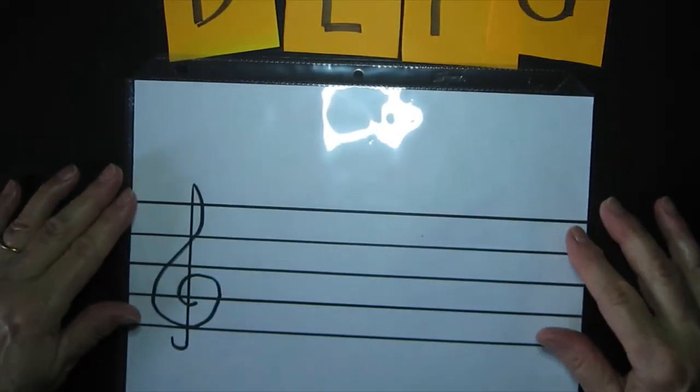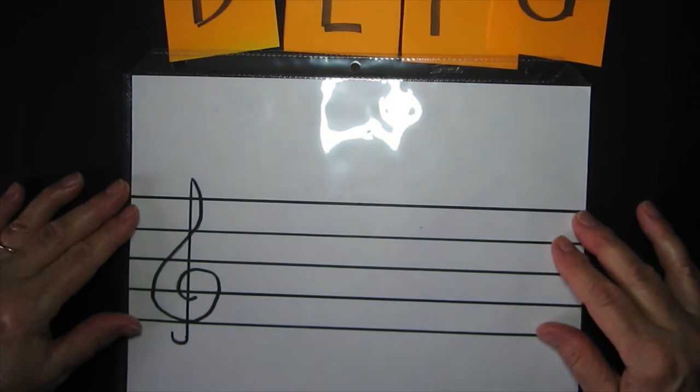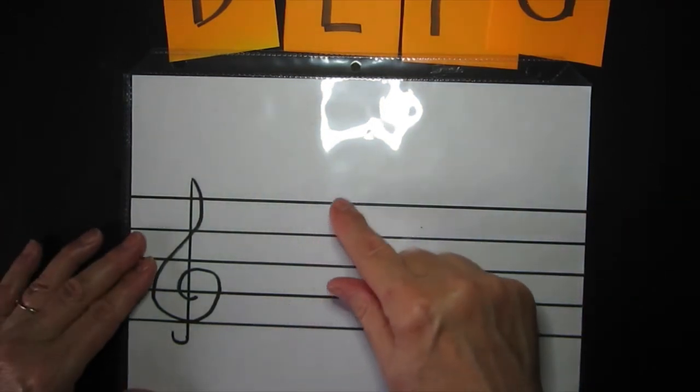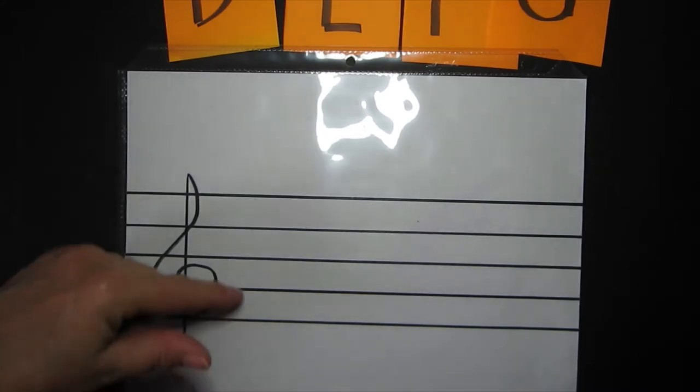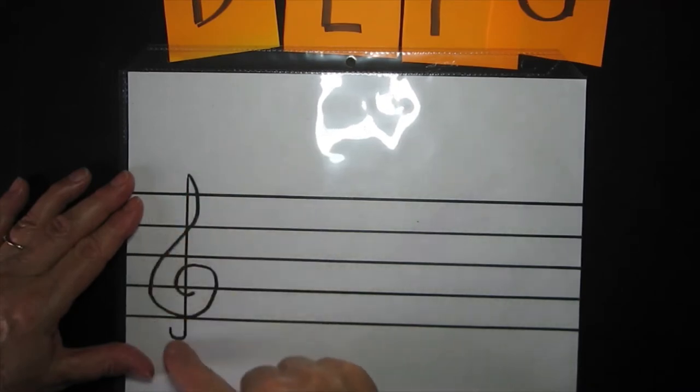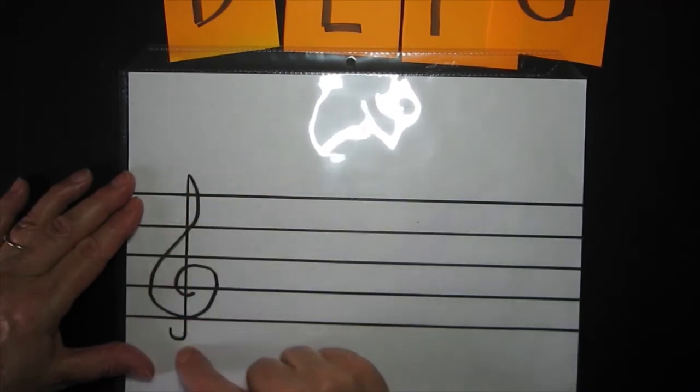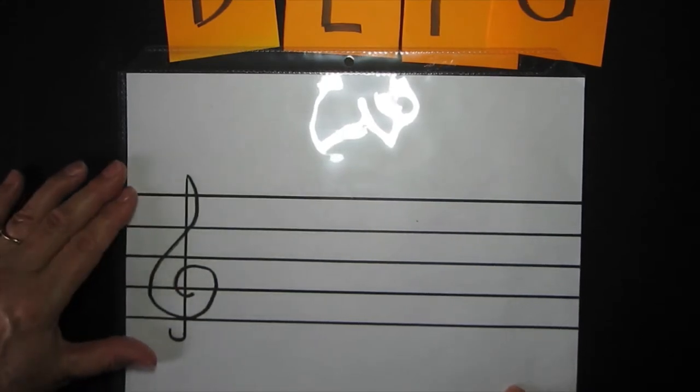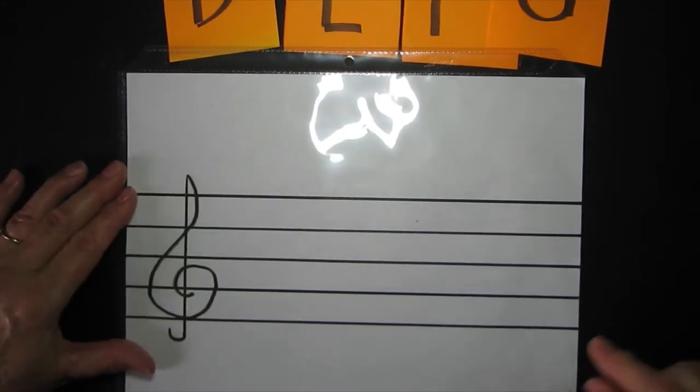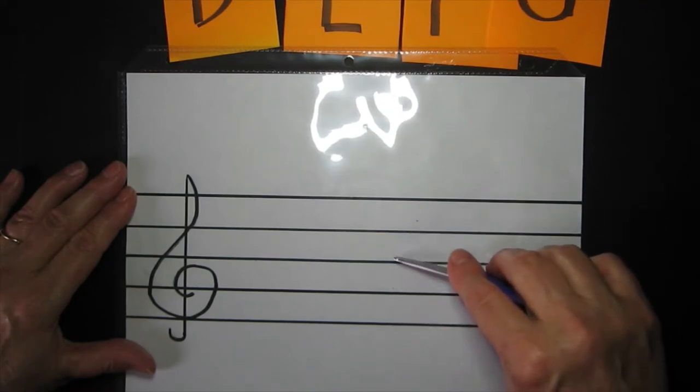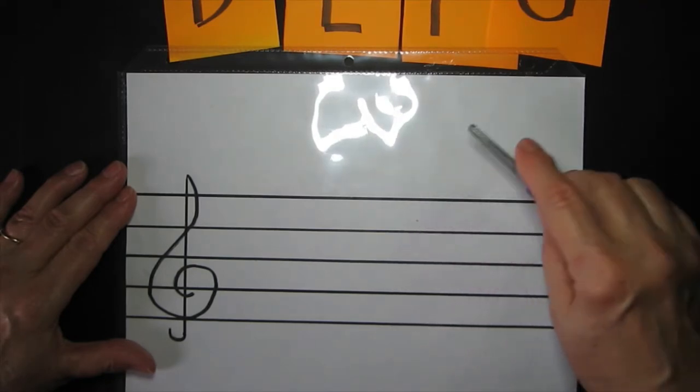Now first of all, I'm going to show you this. This is what we are working on learning how to read. Now these lines and spaces are like stair steps in low to high sounds. And this little sign right here tells us that it is the higher sounds. The name of this sign is called the G clef or the treble clef. And each of these lines and each space also is given a name, a letter name.